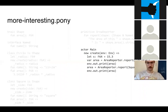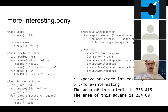In our main class we do our work. We have s, a variable holding 15.3. We call area reporter on a circle with the value of s, and a square with the value of s, and in both cases we print out the area of those shapes. If we compile the program using ponyc and run it, we get: the area of the circle is 735.45 and the area of the square is 234.09.